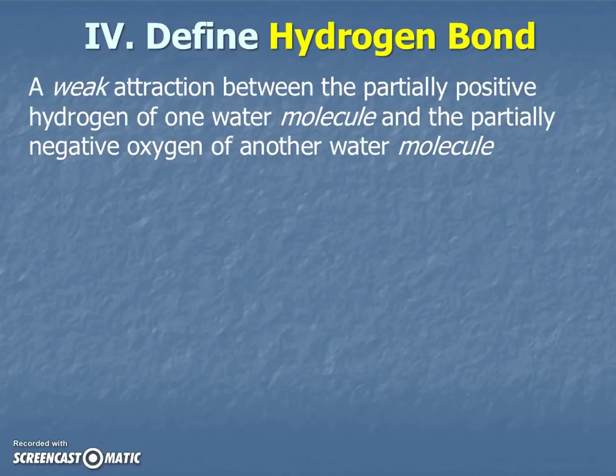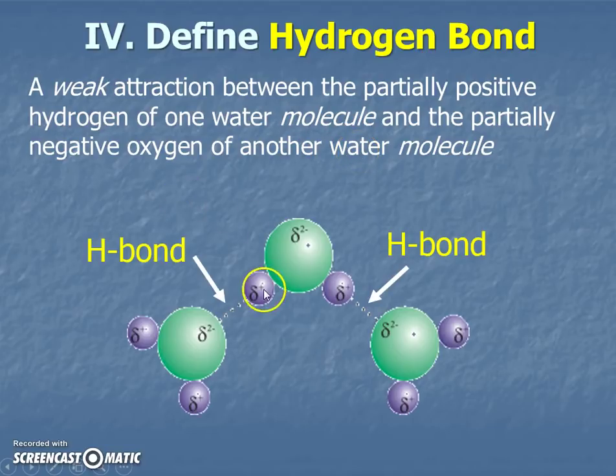We call this actually a hydrogen bond, which is a new and tough vocab word. So our two vocab words that are really tough today are polar and hydrogen bond. Make sure they're highlighted in your notes. Hydrogen bond is a weak attraction between the partially positive hydrogen of one water molecule and the partially negative oxygen of another. So it's the attraction between the partially positive hydrogen here and the partially negative oxygen here. We call this association a hydrogen bond, an H bond. Same thing over here. And guess what? Really, there'd be tons of water molecules doing this everywhere.